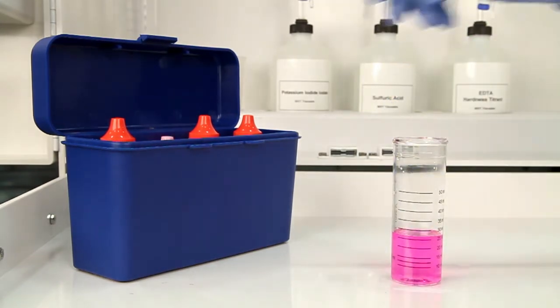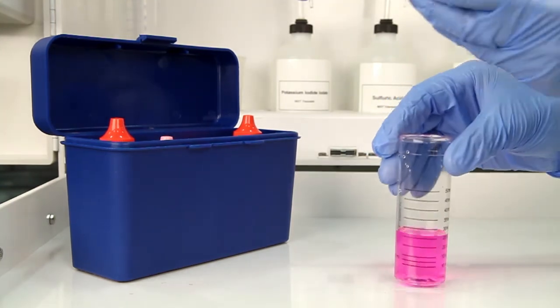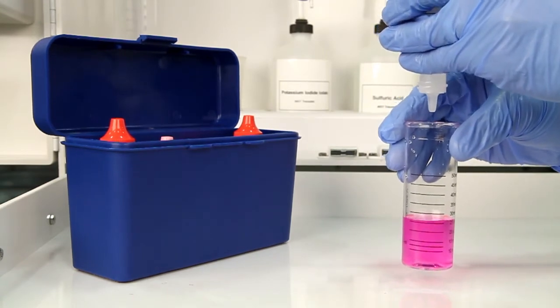The next step is to perform the titration using hydrochloric acid titrant. Make sure you have the proper titrant and sample size for this titration. Add the titrant one drop at a time, swirling the vial after each drop to properly mix the sample.